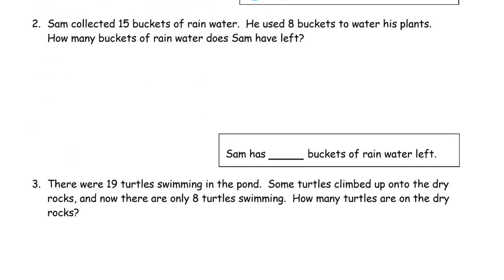Now we have Sam collected 15 buckets of rainwater. He used 8 buckets to water his plants. How many buckets of rainwater does Sam have left? So we need 15. That's 10 and 5. 1, 2, 3, 4, 5, 6, 7, 8, 9, 10. And 1, 2, 3, 4, 5. That's 10 and 5, which is 15.